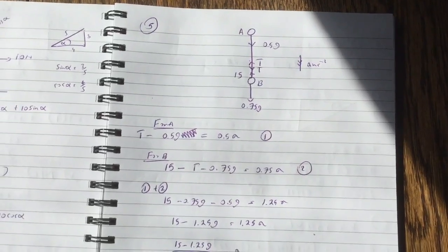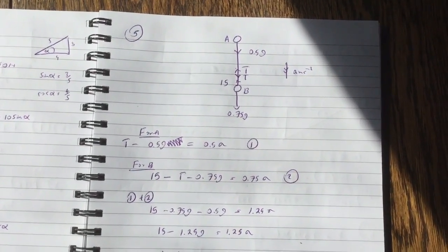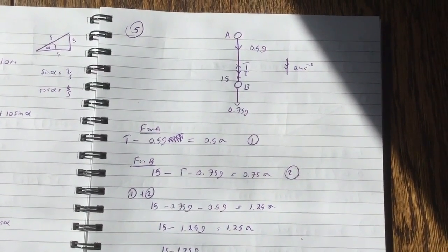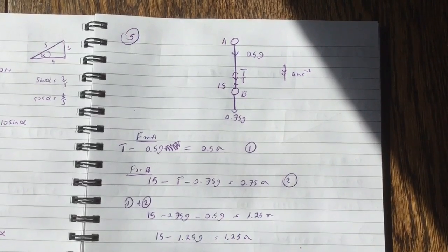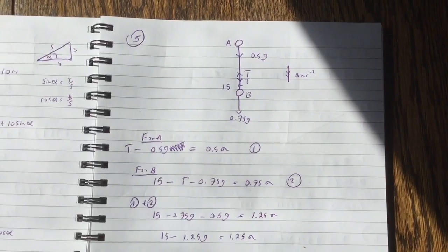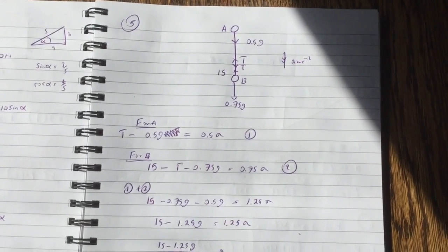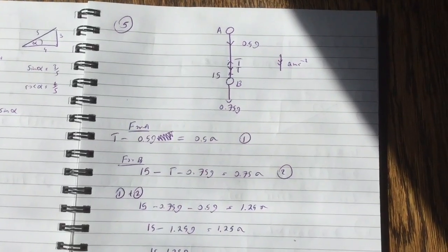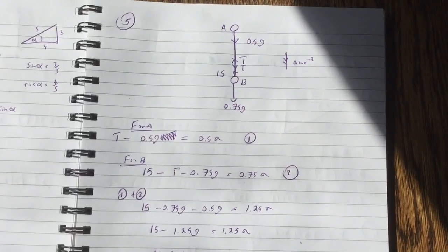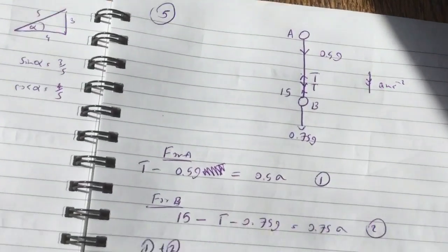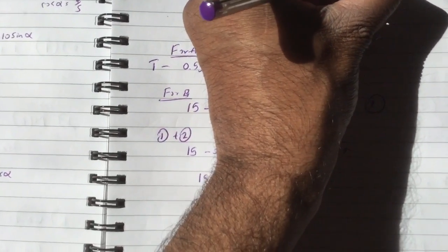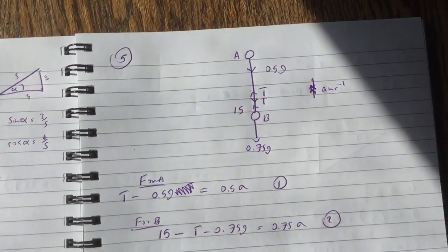Question 5. So we have these two particles moving upwards, not downwards. So I've done T minus 0.5g equals 0.5a. And then I go 15 minus T minus 0.75g equals 0.75a. This should be upwards actually.